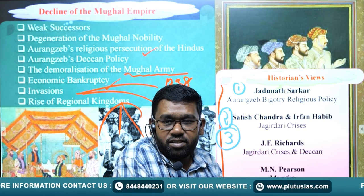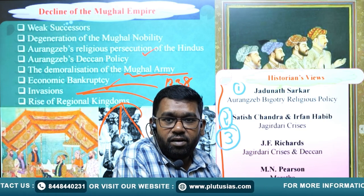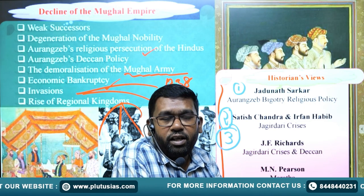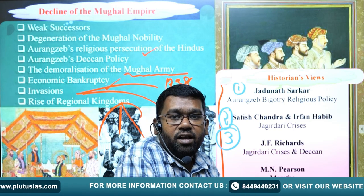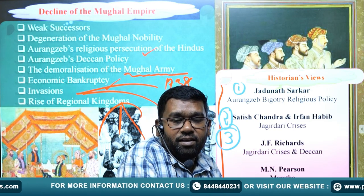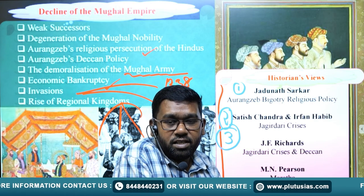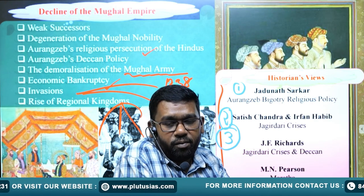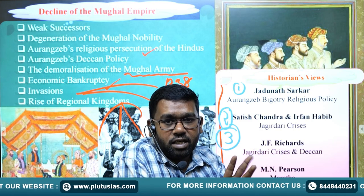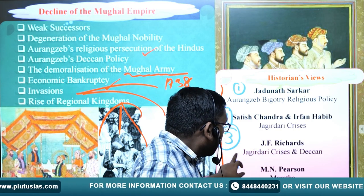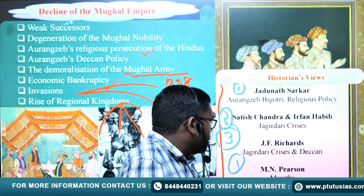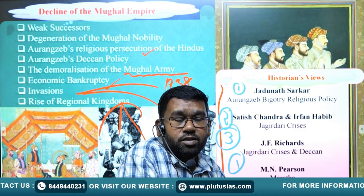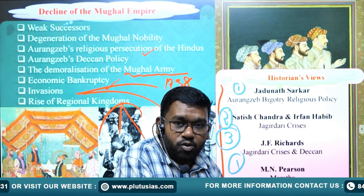Richards points out that Golconda and Bijapur, captured in 1685 and 1687 by Aurangzeb, had lands and resources that were not properly utilized by the Mughals. This inability to utilize newly conquered territories led to the decline of the Mughal Empire.